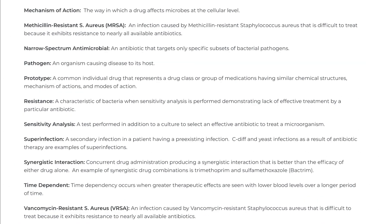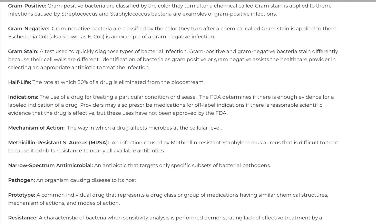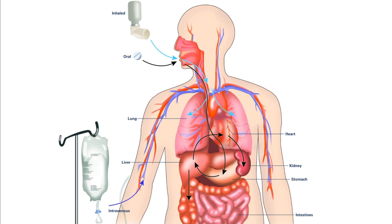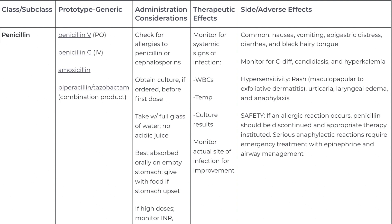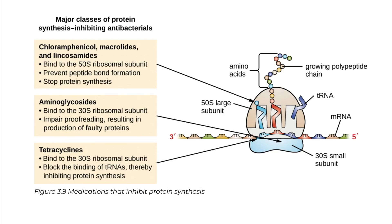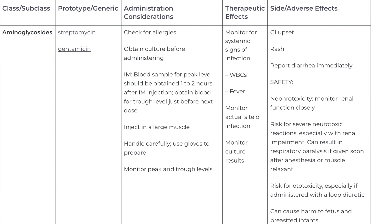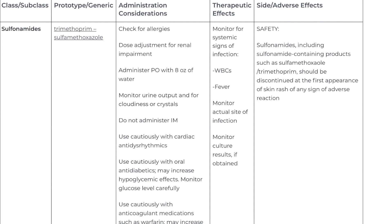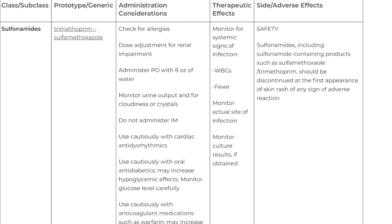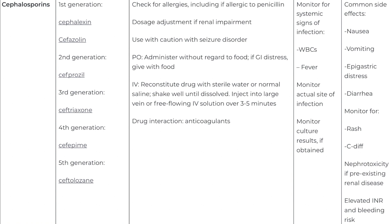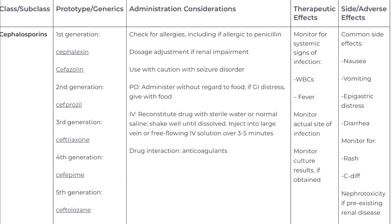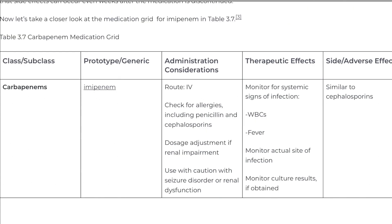One risk associated with using broad-spectrum antimicrobials is that they will also target a broad spectrum of the normal microbiota, which can cause diarrhea. They also increase the risk of a superinfection — a secondary infection in a patient with a pre-existing infection. A superinfection develops when the antibacterial intended for the pre-existing infection kills the protective microbiota, allowing another pathogen resistant to the antibacterial to proliferate. Common examples of superinfections include yeast infections, or candidiasis, and pseudomembranous colitis caused by Clostridium difficile, or C. diff, which can be fatal.